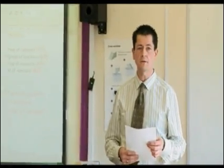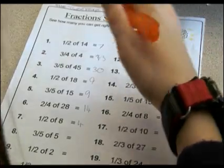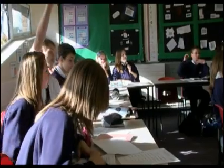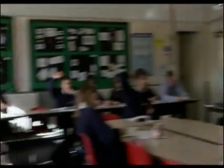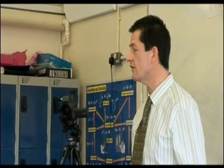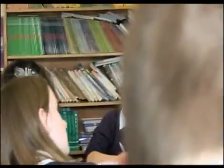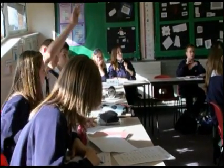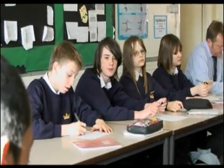Three fifths of 45, anyone? 15. Divide that by 5 — 45 divided by 5 gives you 9, multiplied by 3 is 27. Half of 18 — nice easy one. Good. Three fifths of 15 — Anton? 9. Good. I enjoyed the starter. As a matter of fact, I wish he'd spent more time on it, because I could see it was something they could do and they were being kind of successful.